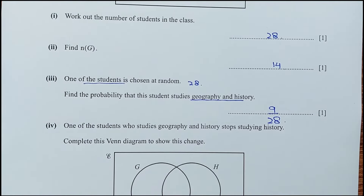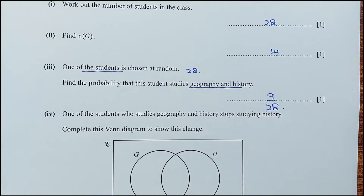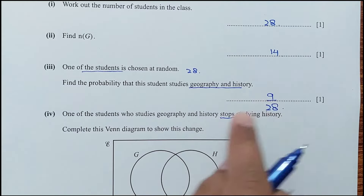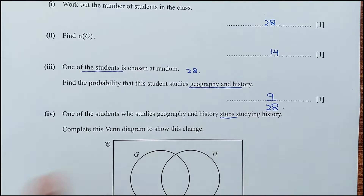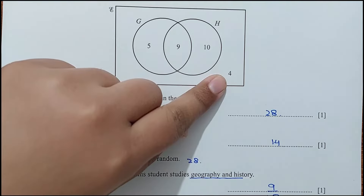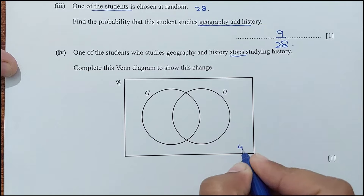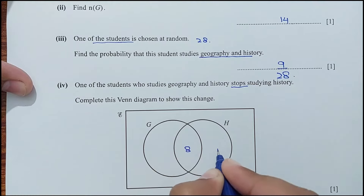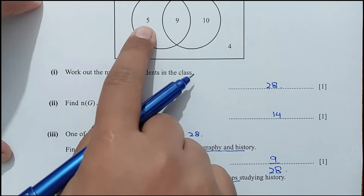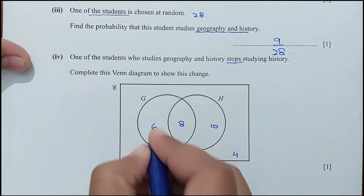For part 4, one of the 9 students in the intersection stops studying history but continues geography. Complete the Venn diagram. The outer region stays at 4. The intersection becomes 8. History-only stays at 10. The geography-only region becomes 6, since that student moves there. That is the updated Venn diagram.